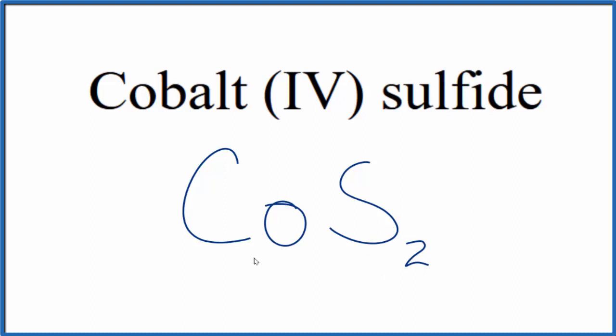If you were given the formula and asked to write the name, you know that the sulfide ion is 2-, and you have two of them, so the cobalt would be 4+, and that's why you'd write cobalt (IV) and then the sulfide ion. This is Dr. B, and thanks for watching.